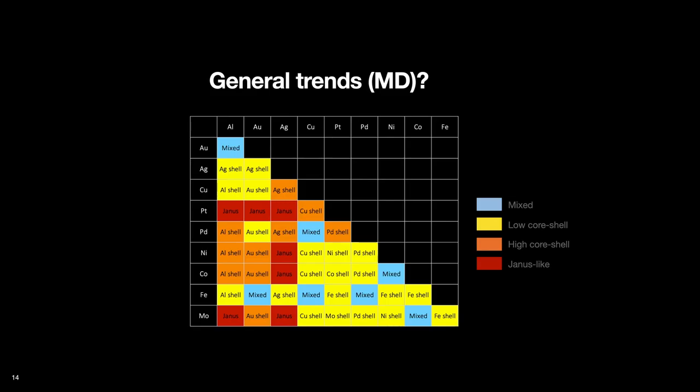But when we tabulated our MD results based on the sequence, the order of metals provided by their work, it didn't fit our MD results nicely enough. So we wanted to find a sequence or rules that are hidden in our MD results here.